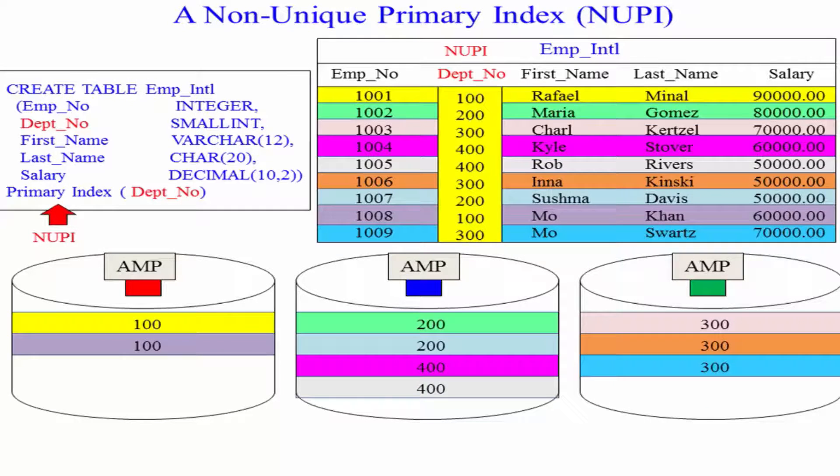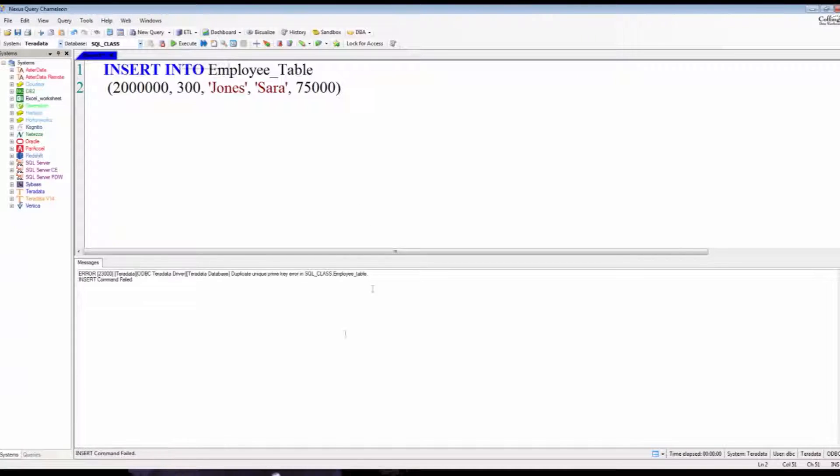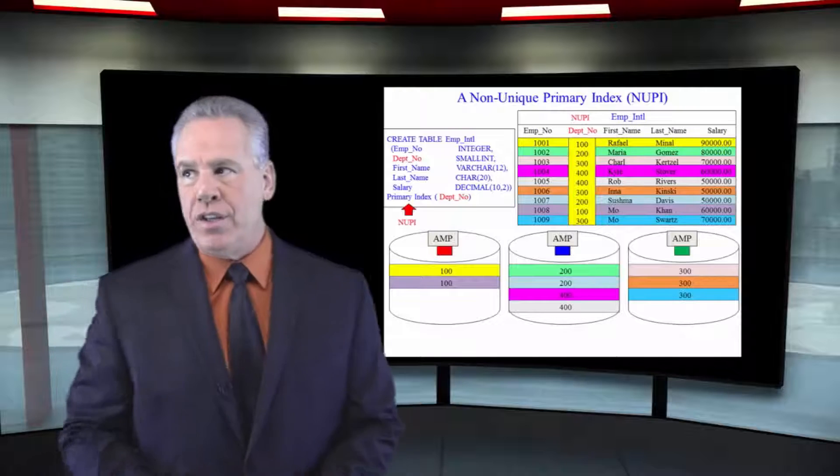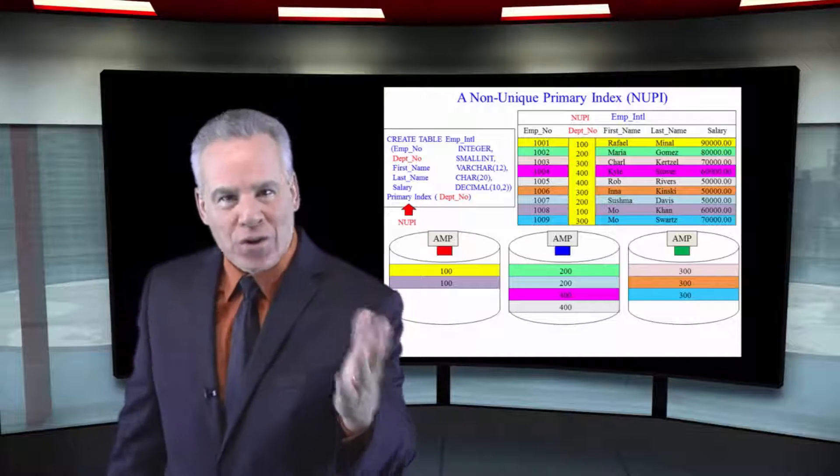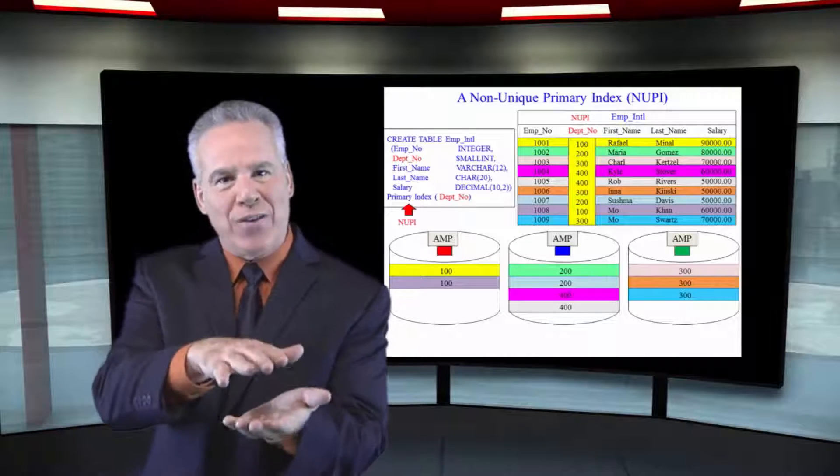Now, the difference between a UPI and a NUPI is if you've got a UPI and try to put a duplicate value in on that primary index, it kicks it out and says no, no, this is a unique primary index, I've been told to watch this, I'm kicking that out. But on a non-unique primary index, of course you can have duplicate values.